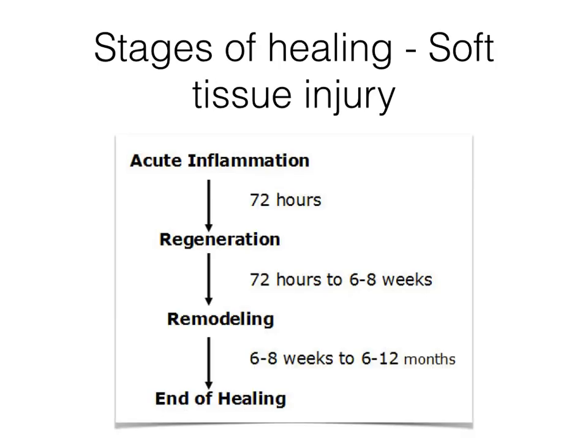The stages of healing, specifically in relation to soft tissue injury, include the acute inflammation stage, which lasts for the first 72 hours; the regeneration phase, which begins from about 72 hours and lasts up to 6 to 8 weeks; and the remodelling phase, which begins from 6 to 8 weeks and lasts 6 to 12 months, ultimately leading to full healing of the injured area.